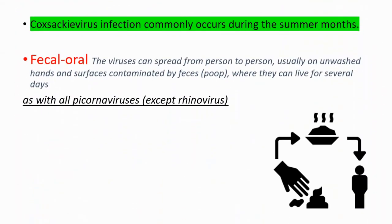They are commonly seen in summer months and are transmitted via the fecal-oral route, which means they can spread from person to person, usually on unwashed hands and surfaces contaminated by feces, where they can live for several days. All picornaviruses except rhinovirus are transmitted via the fecal-oral route.